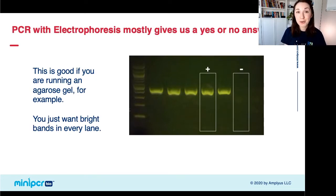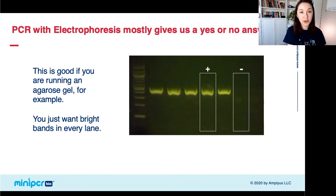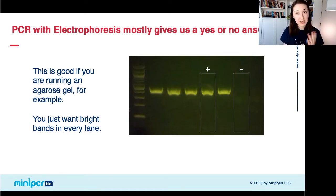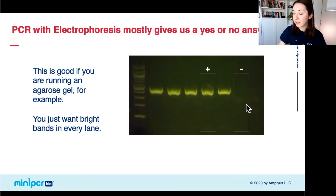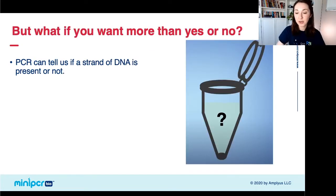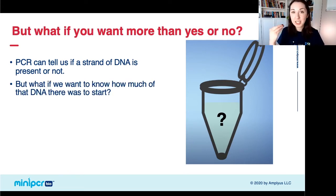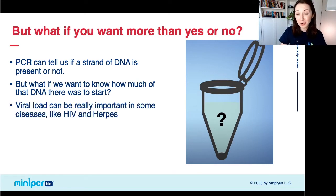PCR with electrophoresis is a really important biotechnology tool, but it usually only gives us a yes-or-no answer about whether a piece of DNA is present in our sample. You can see in our gel that a lane with a bright band means our target DNA was present, while a lane without that band means it was not. So it just gives us a yes or no answer. But sometimes we want more than that — we want to know how much DNA there was to start off with.